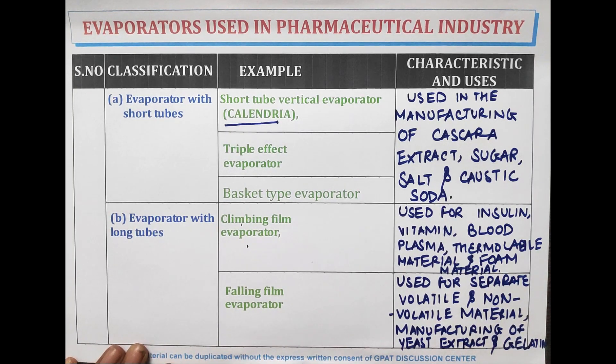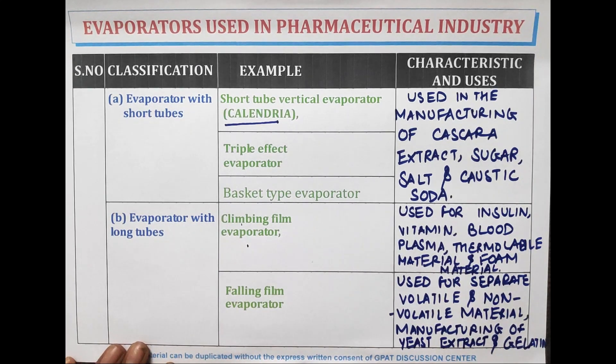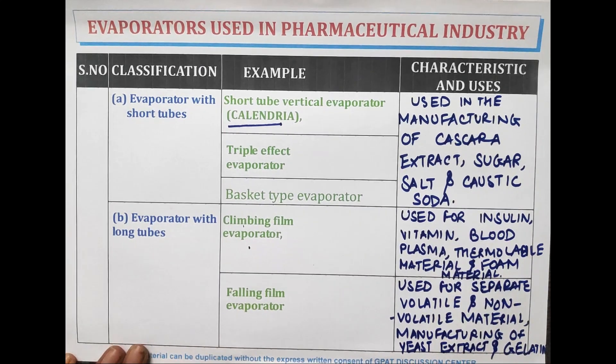Falling film evaporator is used for the separation of volatile and non-volatile material, and for the manufacturing of yeast extract and gelatin.